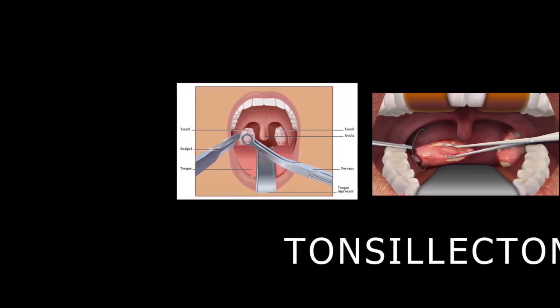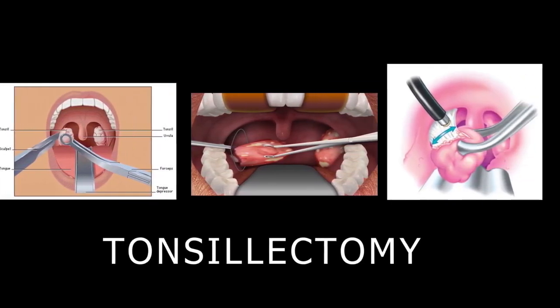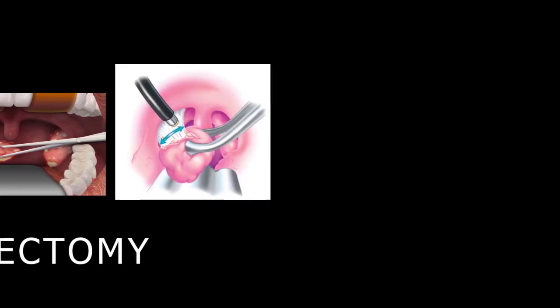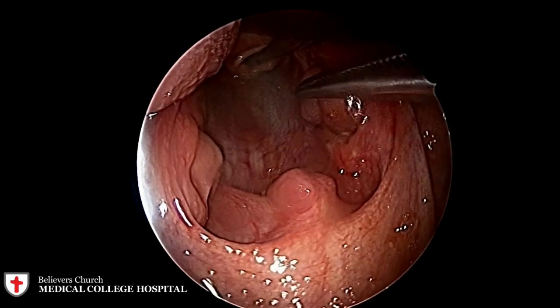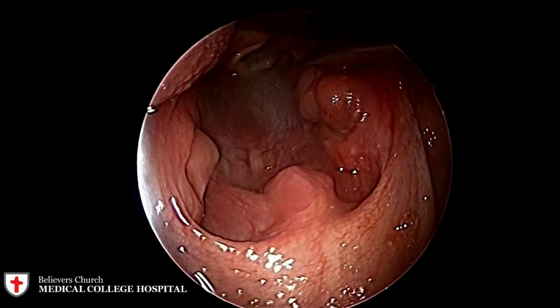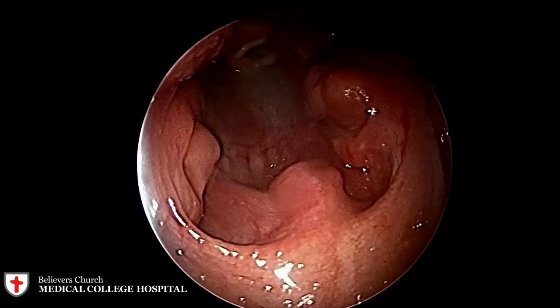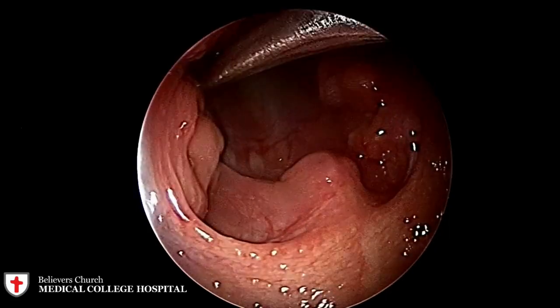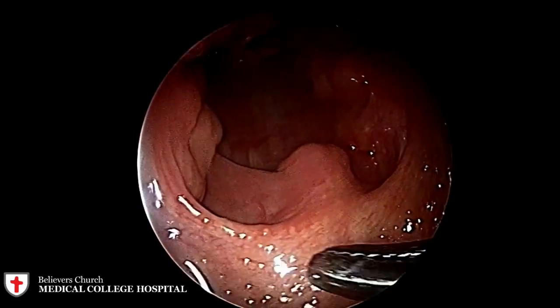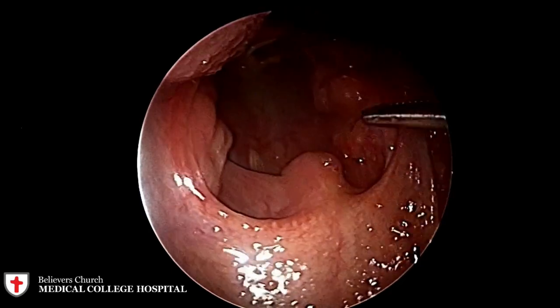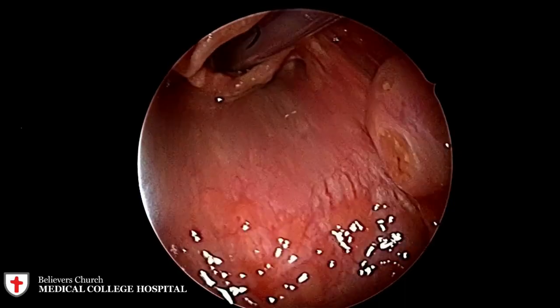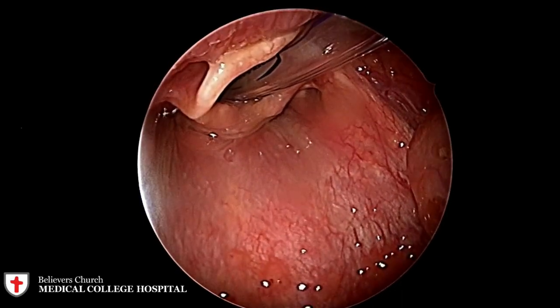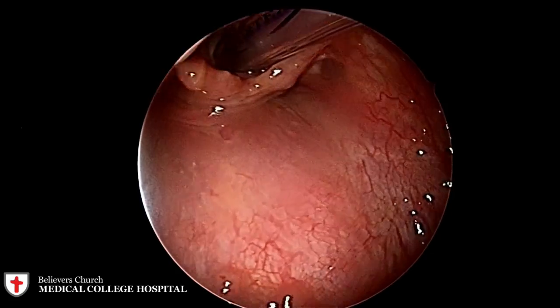Now let's look at the surgery of tonsillectomy. The patient is in Rose's position under general anesthesia. Remember that you are viewing the oropharynx in the inverted position. This is the right tonsil being touched by the instrument, and this is the left tonsil. The uvula is in the center and is identified for reference. We are also looking at the larynx with the endotracheal tube inside.